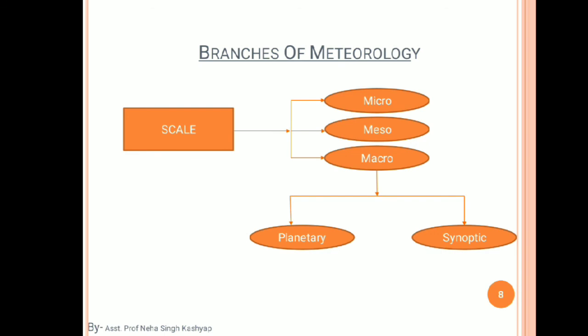In macro-meteorology, the planetary scale has a horizontal measuring scale of about 2,000 km and a vertical scale of about 10 km. The synoptic scale is the other sub-category of macro-meteorology.